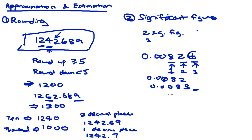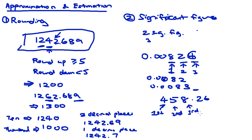What about larger non-decimal numbers? For example, 458.26. We look from left to right: 4 is the first significant figure, 5 is the second, and 8 is the third. To express in two significant figures, we keep the first two digits but must consider the third: since 8 is greater than 5, we round up the second digit from 5 to 6, giving 460. Always remember to go left to right, with the first non-zero digit as the first significant figure.